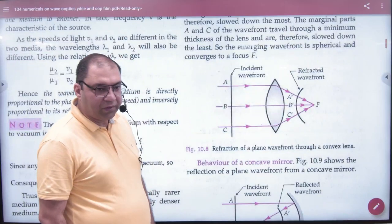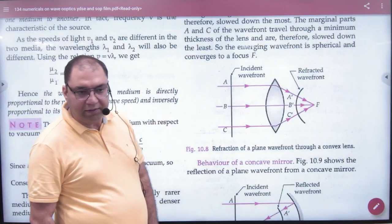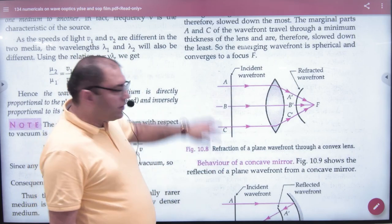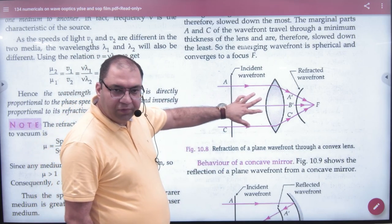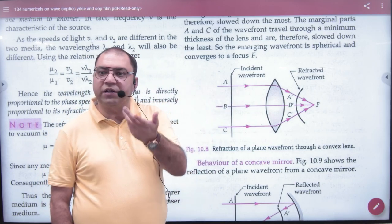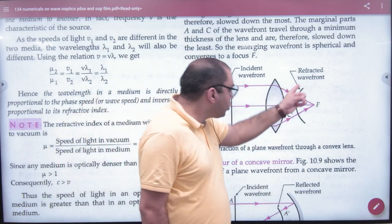If we take a lens, you have a plane wavefront. If a plane wavefront is incident, and what is the ray of light? Converging lens - converged. What is the wavefront shape? The wavefront shape is this.